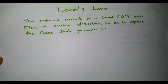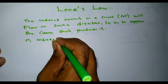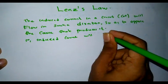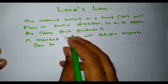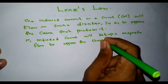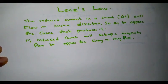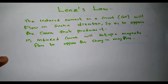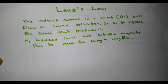The induced current will flow in such a direction so as to oppose the cause — that is, to oppose the change in flux — and will try to minimize the change in flux. The induced current will set up a magnetic flux to oppose the change in magnetic flux. As per Lenz's law, the induced current will flow in such a direction so as to oppose the cause, which is the changing magnetic flux, that leads to the development of this induced current.